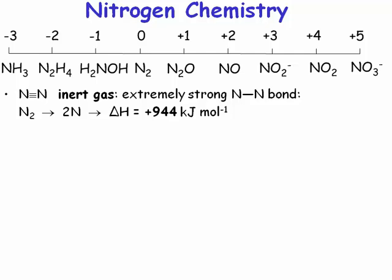What you get in nitrogen chemistry is every conceivable oxidation state. If we look at nitrogen, we can basically take nitrogen with a less electronegative element. Hydrogen is less electronegative than nitrogen, so formally, if we form a nitrogen-hydrogen bond, when we break it, the pair of electrons goes to the nitrogen, so the nitrogen has a negative oxidation state. If we have three of those hydrogens, then the oxidation state of nitrogen in the ammonia molecule is minus three.